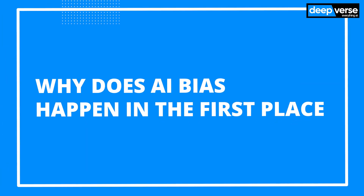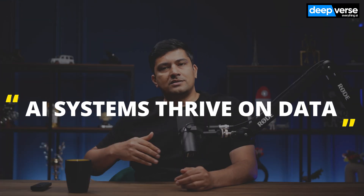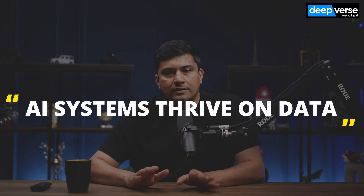So let's dive in. Why does AI bias happen in the first place? To understand that, we need to break down how AI systems are developed. AI decision making processes rely purely on data, and lots of data. If the data you feed into the AI system is biased, then the decisions it makes will be biased too.